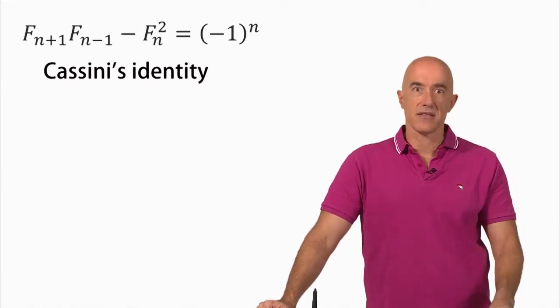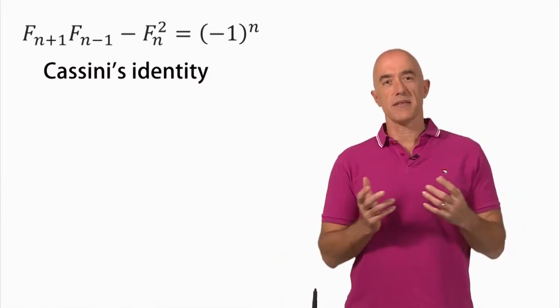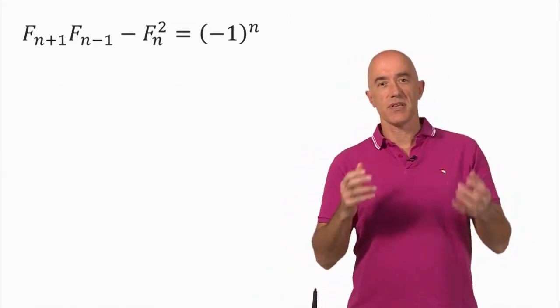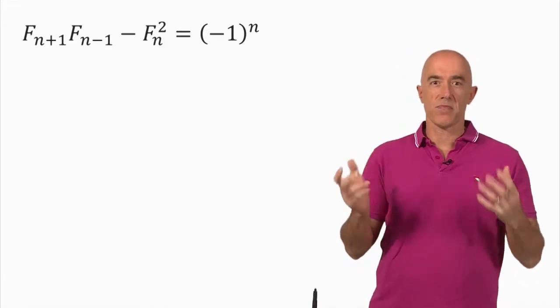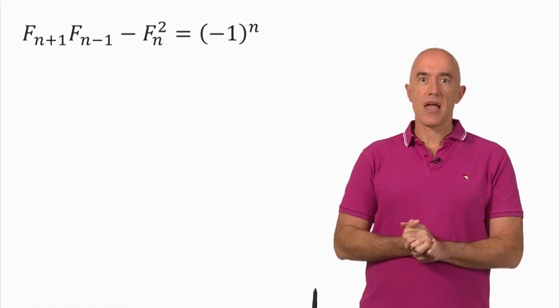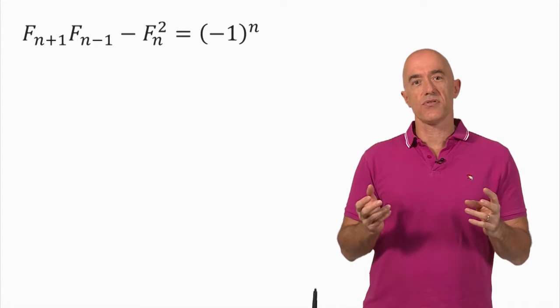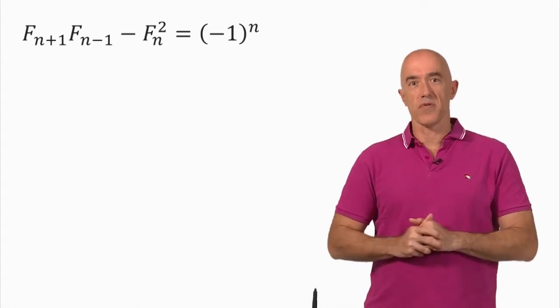depending on whether n is even or odd. This identity is the basis of a really interesting mathematical trick that has the name the Fibonacci bamboozlement, and I think the easiest way to show you how the Fibonacci bamboozlement works